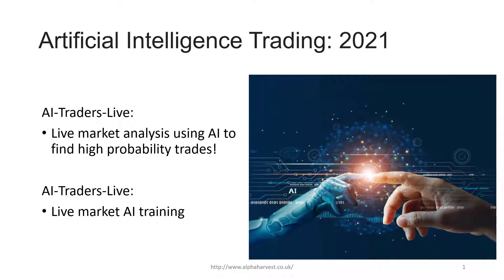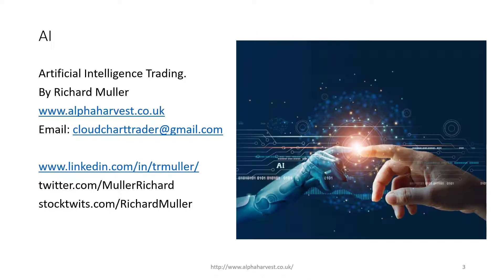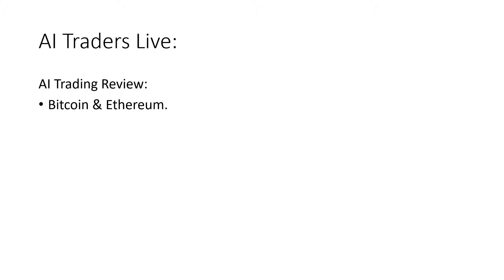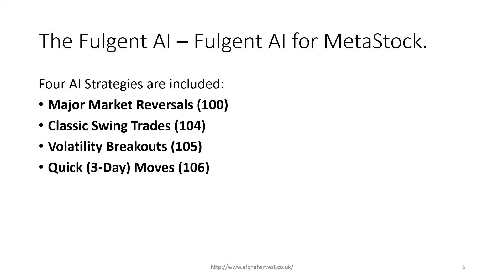Welcome to AI Traders Live — live market analysis using artificial intelligence to find high probability trades. I'm Richard Miller and I'll be presenting today's AI Traders Live. We're going to look at Bitcoin and Ethereum from an AI trading perspective. We've got four AI engines: screening strategies, major market reversals Code 100, classic swing trades 104, volatility breakouts 105, and quick three-day moves.